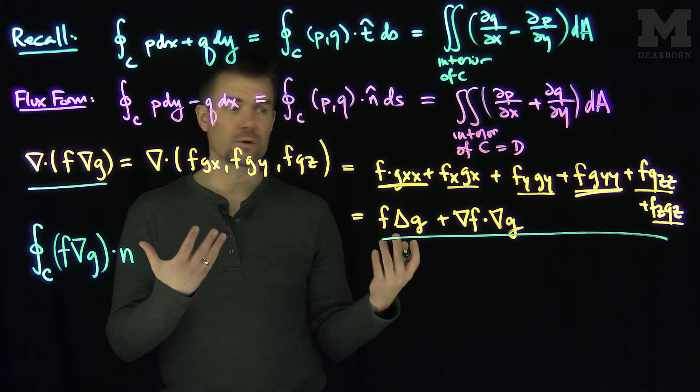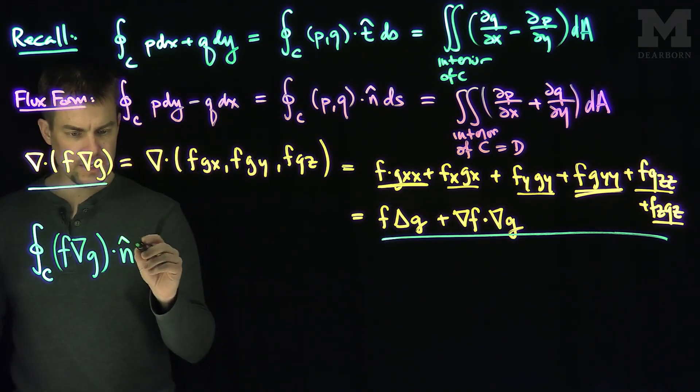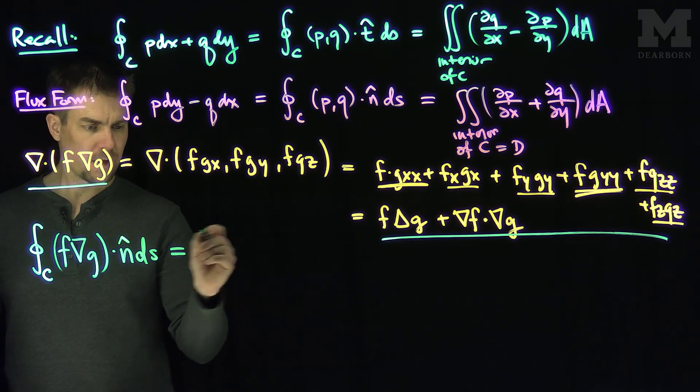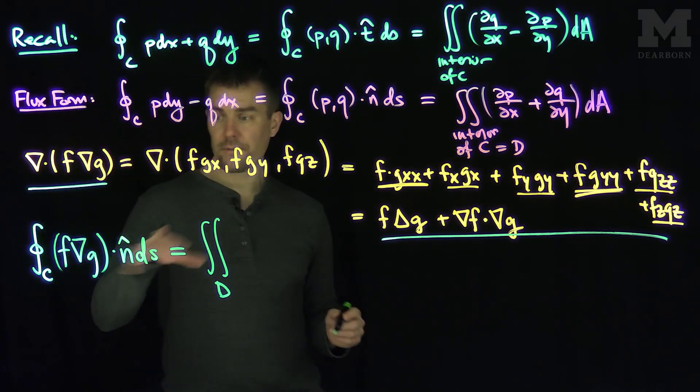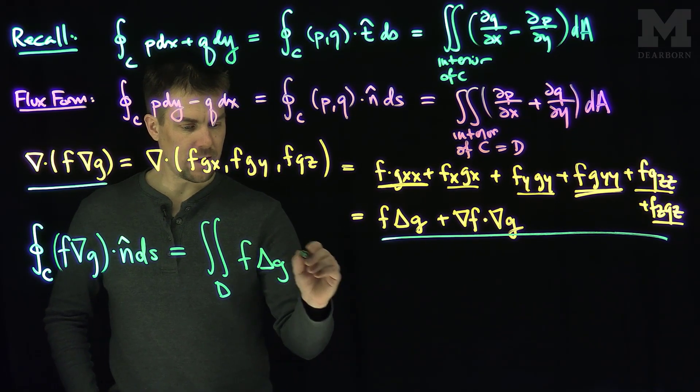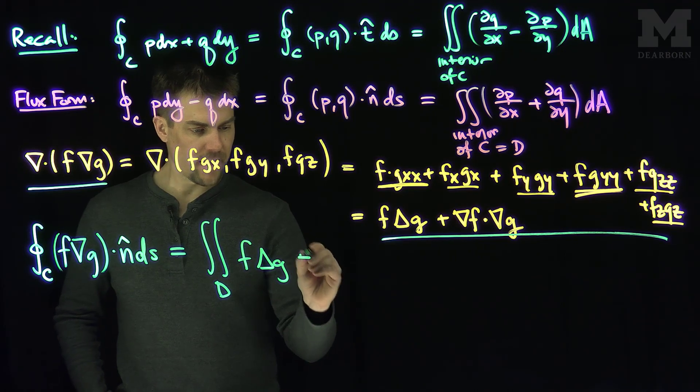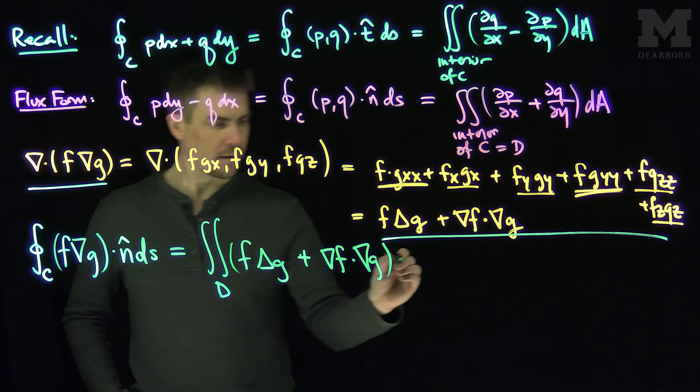And of course, this is for a three-dimensional vector field. The same is true for this formula over here for three dimensions. In particular, if there's no z component, it's also true for two dimensions. So n hat ds by Green's Theorem is going to be the double integral over d of two terms. The first term is f Laplacian g dA, and then plus gradient f dot gradient g dA.